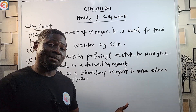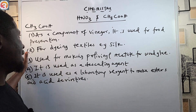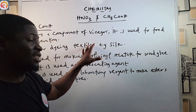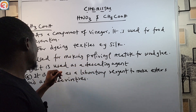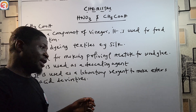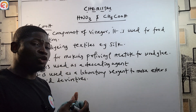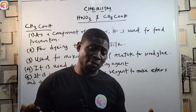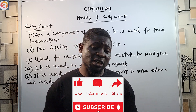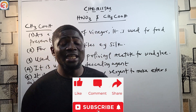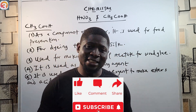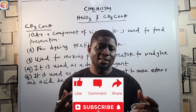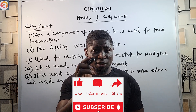So to summarize CH3COOH: it's a component of vinegar used for food preservation; used for dyeing textiles such as silk; used for making polyvinyl acetate for wood glue; used as a descaling agent to remove scale from water-using appliances; and used as a laboratory reagent to make esters and acid derivatives. In the next video we'll see the last set of acids and their uses, then move to the uses of bases. See you in the next episode.